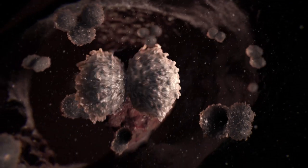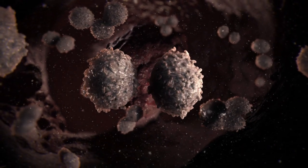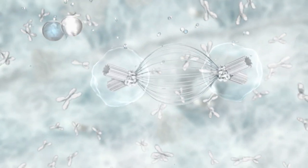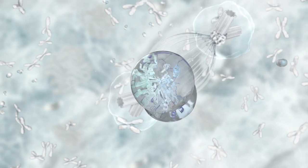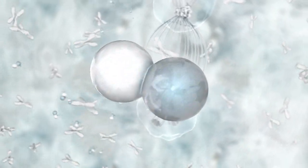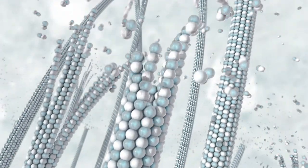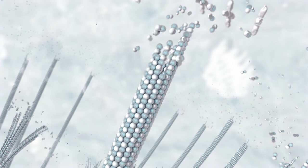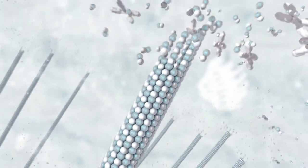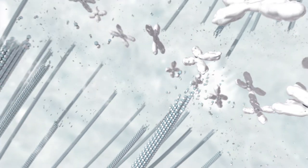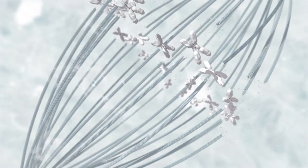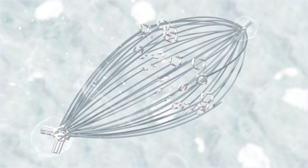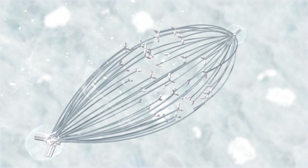Unregulated proliferation is characteristic of cancer cells. During mitosis, microtubules form from soluble tubulin dimers within the cell. Individual microtubules transition frequently between growth and rapid depolymerization. This dynamic instability is crucial to the assembly and function of the mitotic spindle, as microtubule ends seek to capture chromosome kinetochores. Microtubule dynamics is an essential component of mitosis.